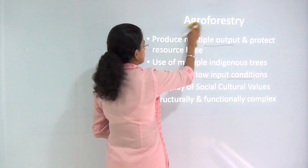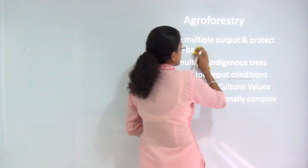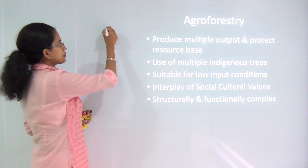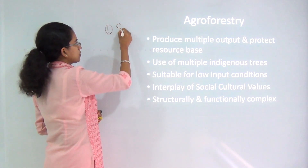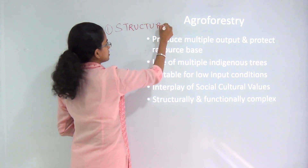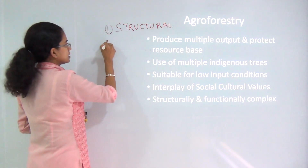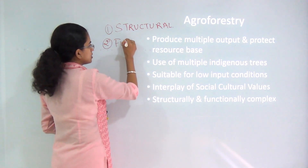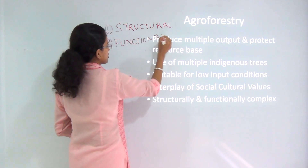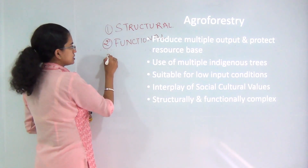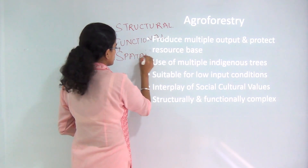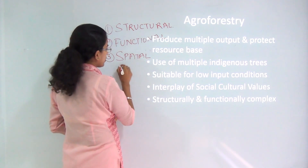When we talk about agroforestry, we can classify it by various means. There are three primary classifications. First is the structural classification, the next is the functional classification, and the last is the spatial or temporal classification.